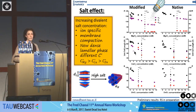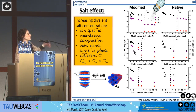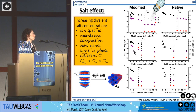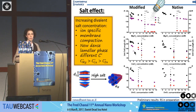When we change the divalent salt concentration, both lamellar and hexagonal phases decrease with increasing concentration until a specific concentration. There is a different critical concentration for each of the ions. After this concentration, a new phase emerges, which is a dense phase, and everything remains stationary.